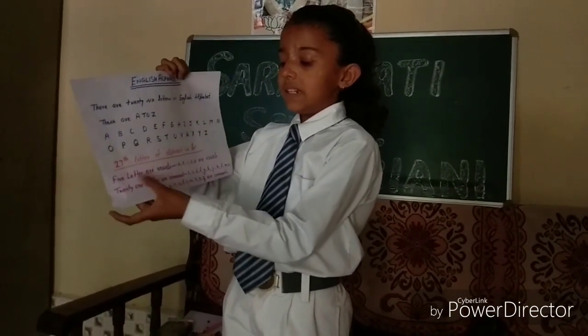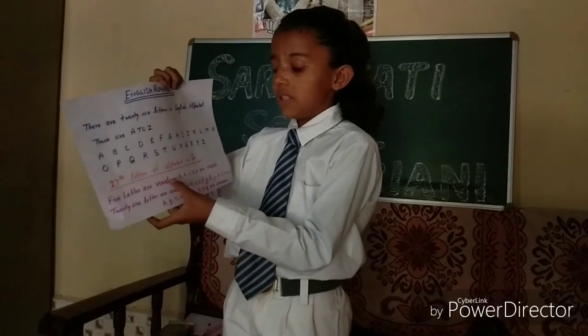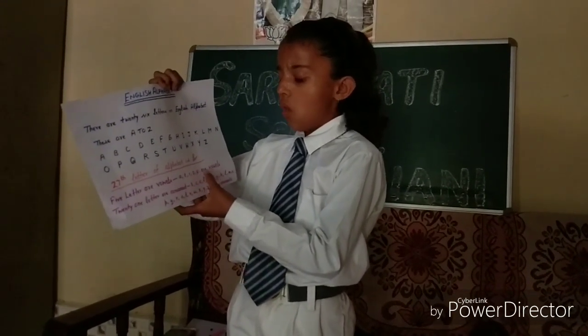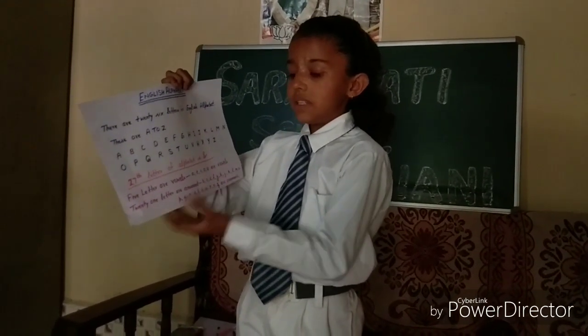5 letters are vowels: A, E, I, O, U are vowels.